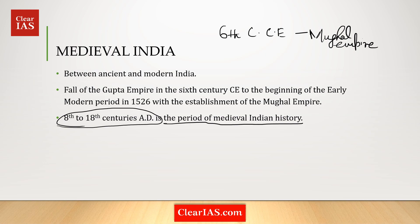The tripartite struggles between kingdoms like the Rashtrakutas, Palas, and Gurjara-Pratiharas mark the beginning of the medieval era. After the death of Shashanka, the king of Bengal and Harshavardhan's great rival, around 637 CE, there was a century of anarchy and confusion in Bengal.